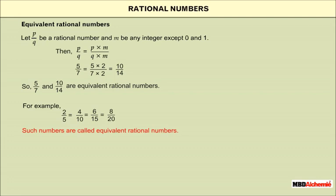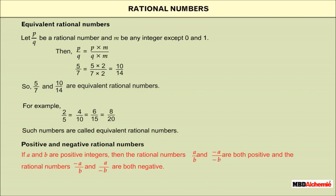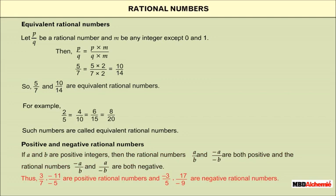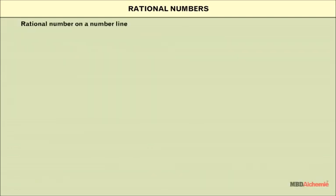Positive and negative rational numbers: if a and b are positive integers, then the rational numbers a/b and (-a)/(-b) are both positive, and the rational numbers (-a)/b and a/(-b) are both negative. Thus 3/7 and -11/-5 are positive rational numbers, and -3/5 and 17/(-9) are negative rational numbers.